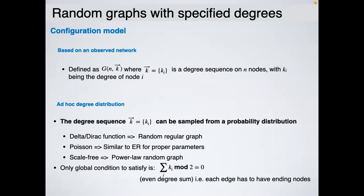The randomized version means: keep all the nodes and keep the degree of each node — so preserve the degree distribution — and then shuffle the edges. We want to randomize who is connected to whom while keeping the degree properties. You can base this on an observed network by taking the degree of each node and generating a new network with exactly that degree distribution, or you can generate a sequence of numbers corresponding to node degrees and give this as input to the configuration model. The only global condition is that the sum of all degrees must be even.